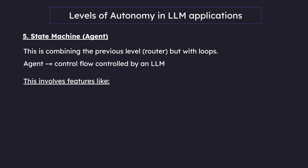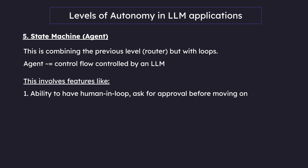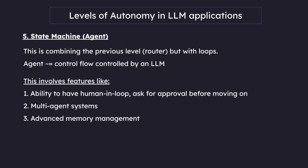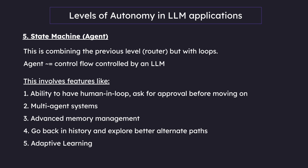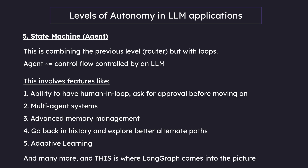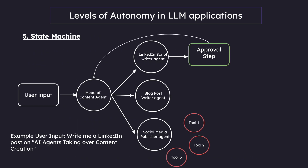State machines involve features like the ability to have a human in the loop — asking for approval before moving on — multi-agent systems, advanced memory management, going back in history and exploring better alternative paths, and adaptive learning, meaning it gets better even if it makes mistakes and won't repeat them. This is where LangGraph comes into the picture.